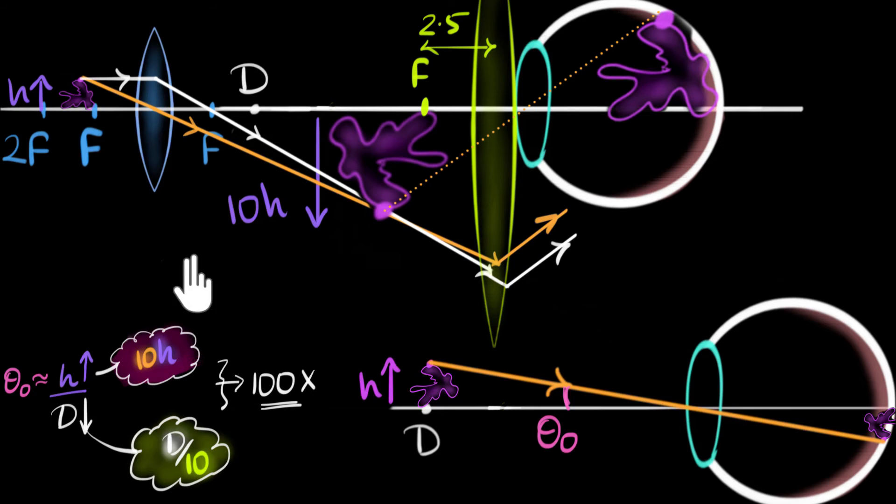Now, before we continue any further, a small thing. This second stage of magnification we got by bringing a convex lens right next to your eye and coming closer, this is actually the principle of a simple microscope. So this lens is just acting like a simple microscope. And we've talked a lot about this in previous videos in great detail. So if this part was not super clear to you or you need more clarity on this, the second part where we went closer, then it would be a great idea to go back and watch those videos and then come back over here.